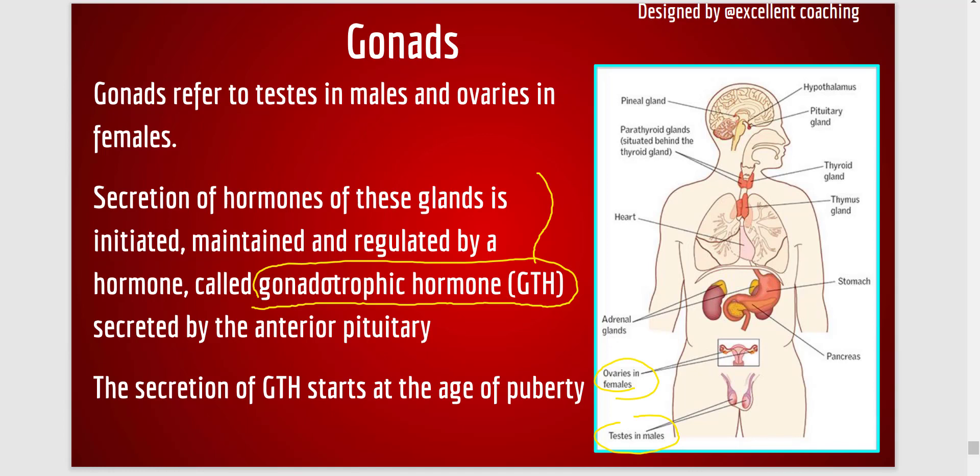Progesterone has no role in sexual development. It is only related to the preparation of the uterus at the time of reception of the fertilized ovum. So progesterone is required only when the female is pregnant and the uterus has to prepare to receive the fertilized ovum. The main role in reproduction is performed by estrogen, so estrogen is the main hormone for females.